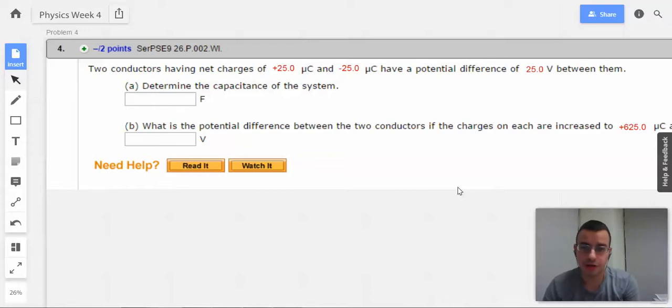Problem 4. Two conductors having net charges of plus and minus 25 microcoulombs have a potential difference of 25 volts between them. Determine the capacitance of the system.